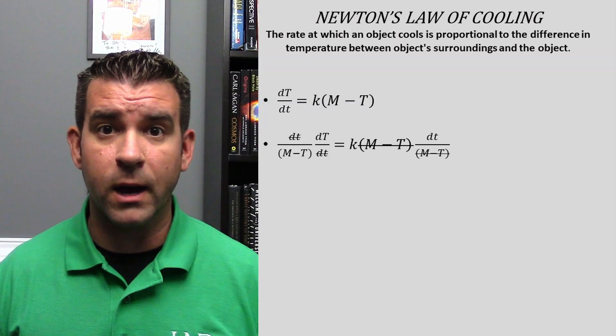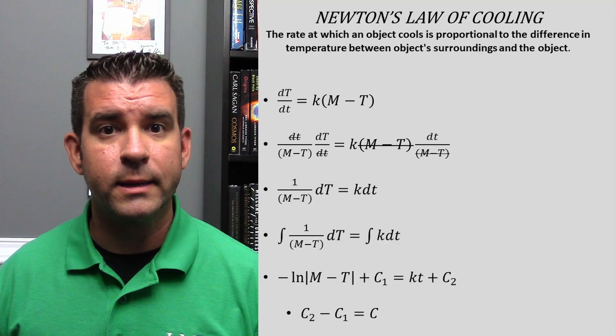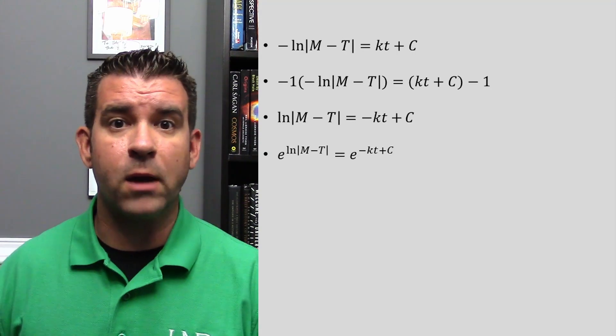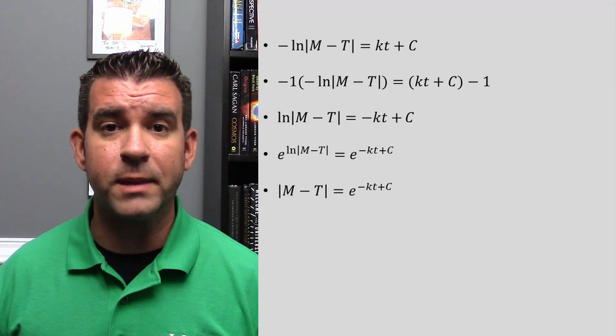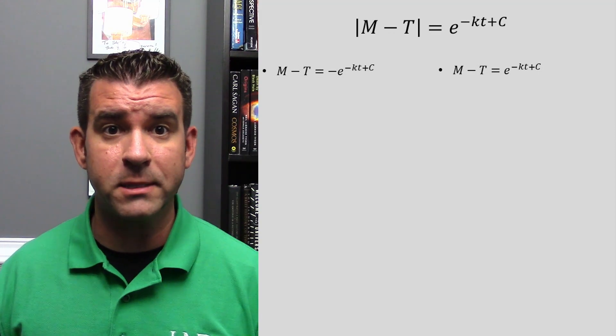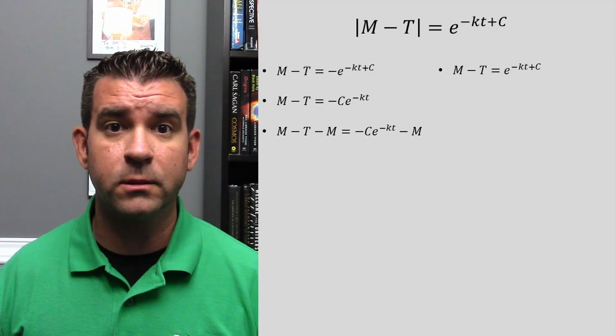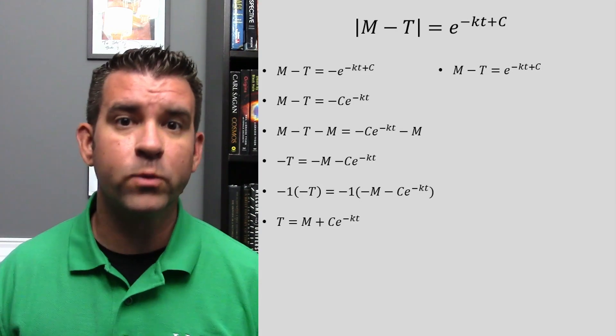Now I want to solve for capital T. I move it to one side and everything else to the other. I use algebra and divide, use calculus and integrate, get the natural log, multiply by negative 1 to make it positive, and now get rid of the natural log. Now we have to deal with the absolute value sign. When we take the natural log of a number, that number must be positive — that is where the absolute value sign came from. So M minus T could be positive or negative. We deal with the left side first: apply exponent rules, do a little subtraction, multiply by negative 1. And we have solved for T.